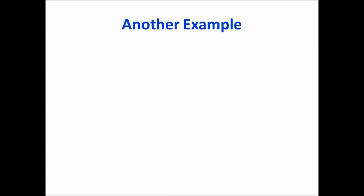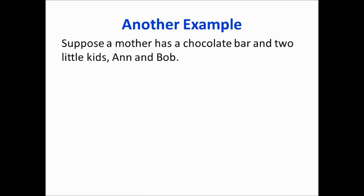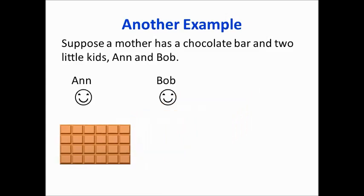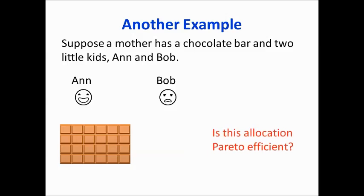Now let's look at another example, which is a little more complicated. Suppose a mother has a chocolate bar and two little kids, Anne and Bob. The task the mother has is how to allocate the chocolate bar among the two kids. One way she could allocate it is to simply give the entire chocolate bar to Anne. Anne may be happy, and Bob may be unhappy. But happiness is not the same question as Pareto efficiency. We should check whether this allocation — giving all the chocolate to Anne and nothing to Bob — is Pareto efficient. Can we find a Pareto improvement?